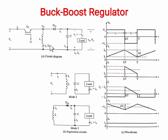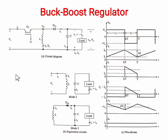In mode two, current flows from the inductor through the capacitor and also through the load. In the buck-boost converter we get negative polarity at the output, so the output voltage is the negative of the input voltage. This is the equivalent circuit of mode one, and this is the equivalent circuit of mode two.